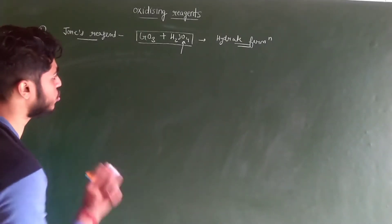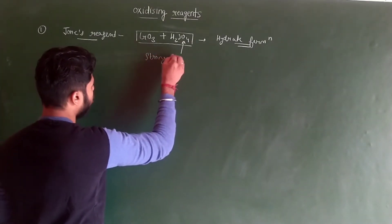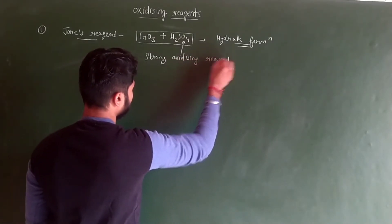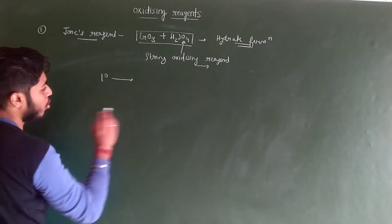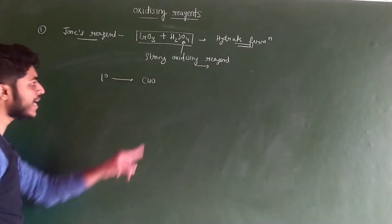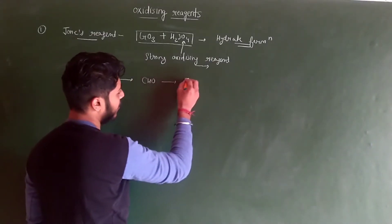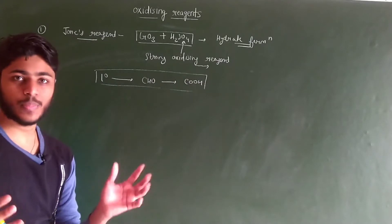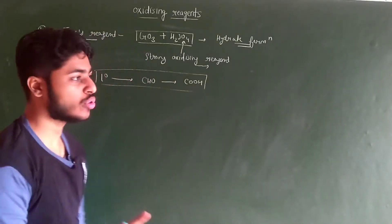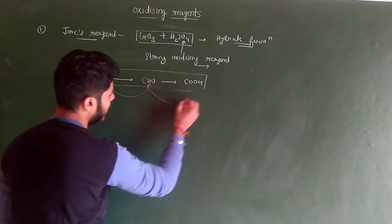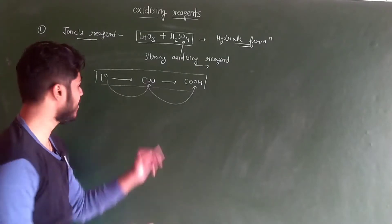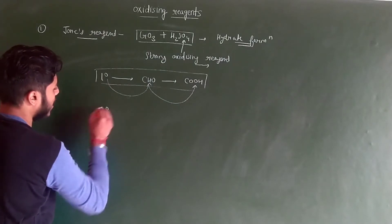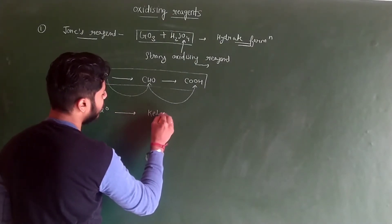Jones reagent is CrO3 in presence of H2SO4. It is a strong oxidizing reagent. When we oxidize primary alcohol with Jones reagent, aldehyde is formed first, but aldehyde does not stop — it further oxidizes and converts to carboxylic acid. It is not like primary alcohol directly converts to carboxylic acid; it will first convert into aldehyde and then aldehyde converts into carboxylic acid. This is a stepwise mechanism. For secondary alcohol, it will always convert into ketone.